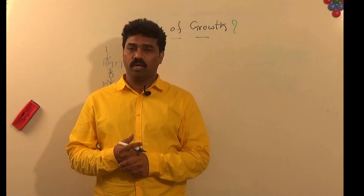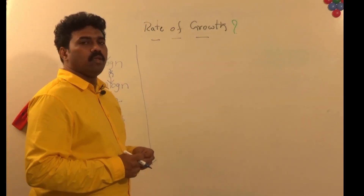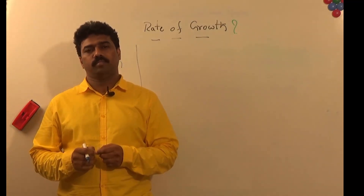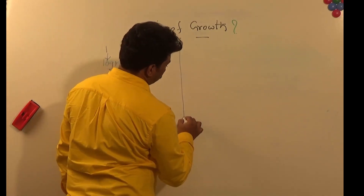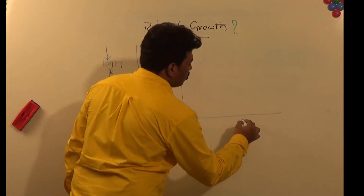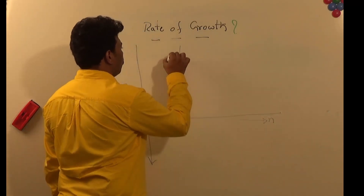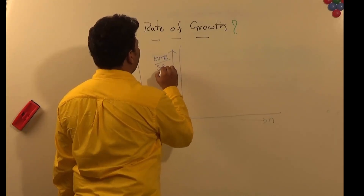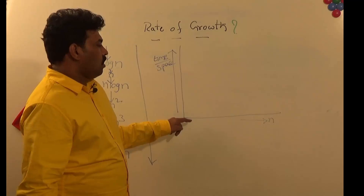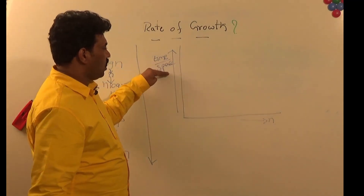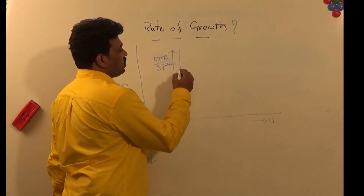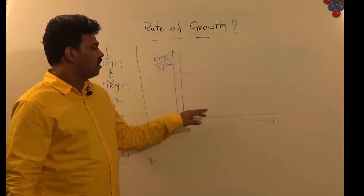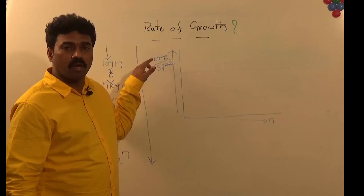When can we say an algorithm has rate of growth 1? If we keep on increasing the input size and there is no change in the running time or running space, we can say the rate of growth is order of 1. On a graph with input size n on the x-axis and running time or space on the y-axis, irrespective of the input size, if there is no change in time or space, the rate of growth is constant — which is 1.